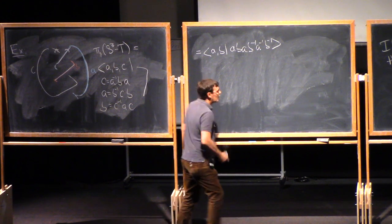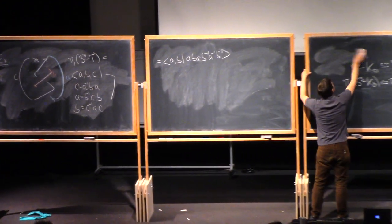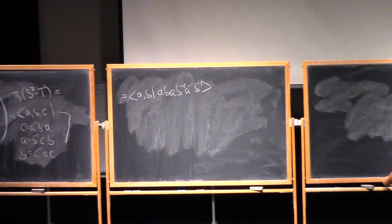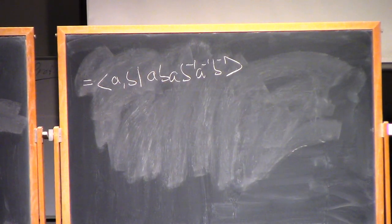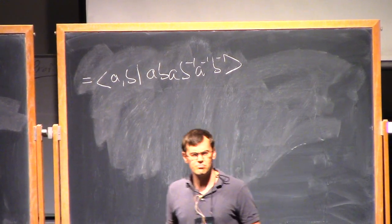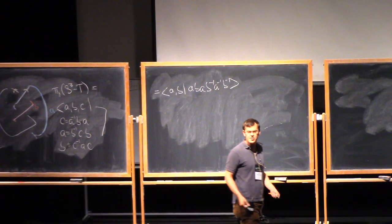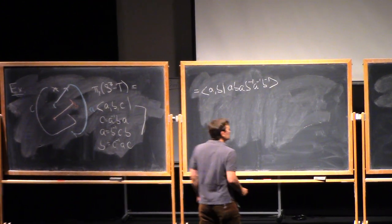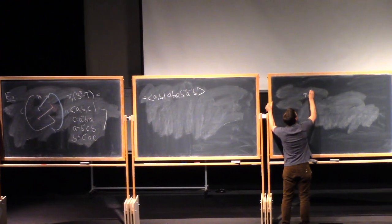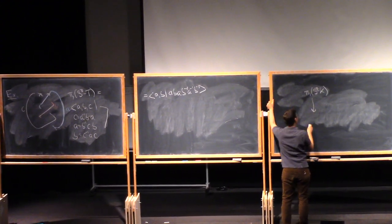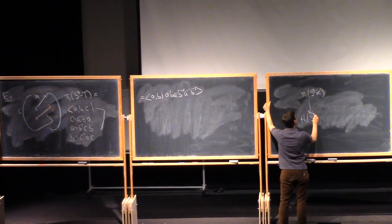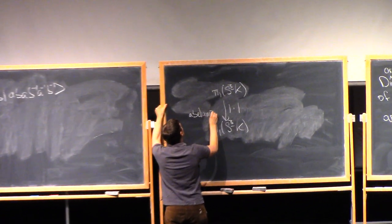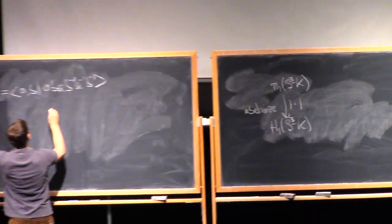Okay. So now I know how to compute pi-1 of a knot complement. What can I do with it? You see, the problem is that, right, so here I have a presentation of a non-abelian group. And non-abelian groups are complicated, right? If I give you two presentations, it's not necessarily easy to decide whether they represent the same group. Well, one thing that I could do, here I've got pi-1 of S3 minus K. I could say, why don't I abelianize? That'll take me to H1 of S3 minus K. I'll call this map abelianization.